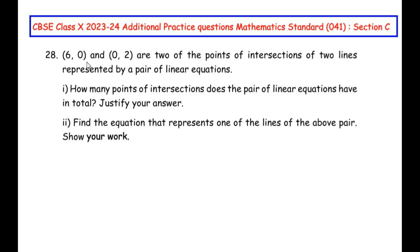The points 6 comma 0 and 0 comma 2 are two of the points of intersections of two lines represented by a pair of linear equations. The first question is: how many points of intersection does the pair of linear equations have in total? Justify your answer. The second question is: find the equation that represents one of the lines of the above pair, and show your work.